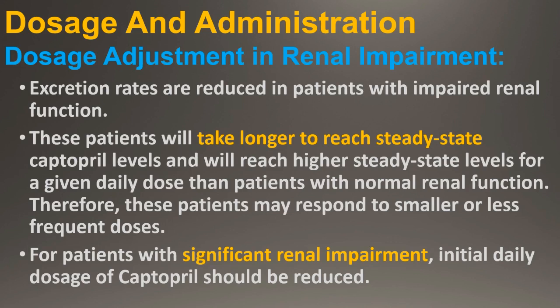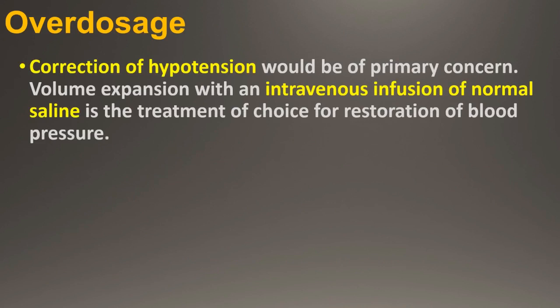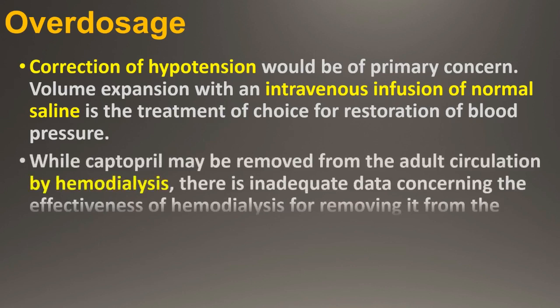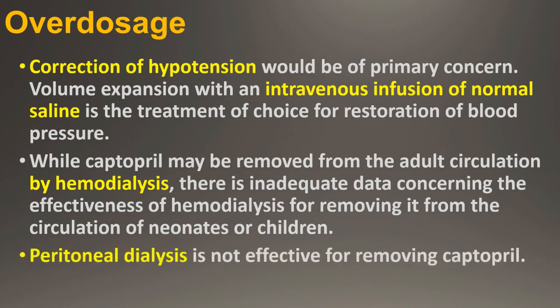Overdosage: Correction of hypotension would be of primary concern. Volume expansion with intravenous infusion of normal saline is the treatment of choice for restoration of blood pressure. While Captopril may be removed from the adult circulation by haemodialysis, there is inadequate data concerning the effectiveness of haemodialysis for removing it from the circulation of neonates or children. Peritoneal dialysis is not effective for removing Captopril.